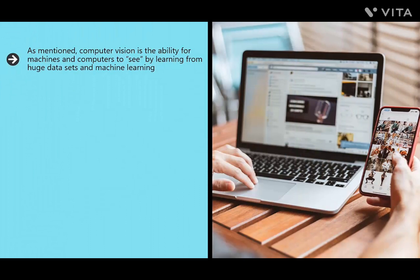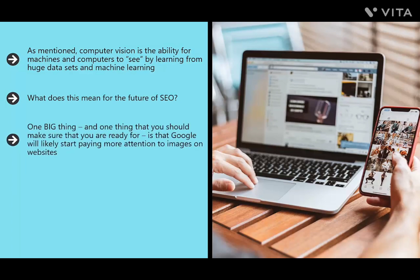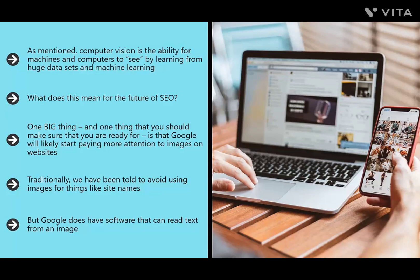Computer vision is the ability for machines to see by learning from huge data sets. By observing countless images, a machine can learn to identify objects or navigate an environment without crashing. What does this mean for SEO? One big thing to prepare for is that Google will likely start paying more attention to images on websites. Traditionally, we've been told to avoid using images for site names because Google can't read an image. But Google does have OCR — optical character recognition — software that can read text from images.